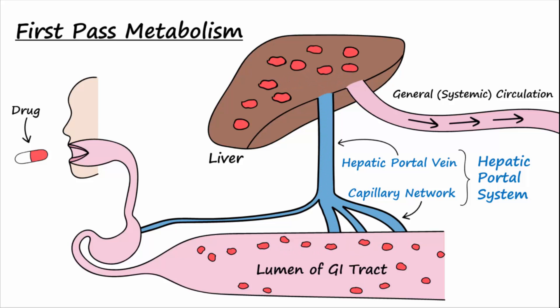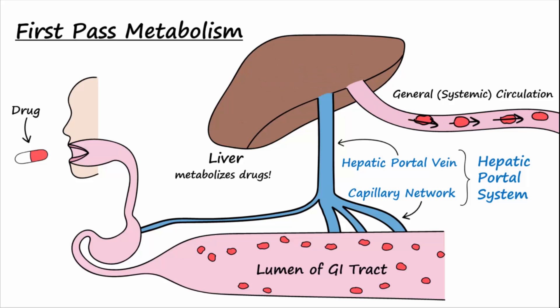After passing through the liver, the drug finally reaches systemic or general circulation where it can be distributed throughout the body to exert its desired action. Since the liver is the main organ of the body that metabolizes drugs, in many cases much of the drug taken orally ends up being destroyed by the liver before it even makes it to systemic circulation. We call this breaking down action by the liver first pass metabolism.